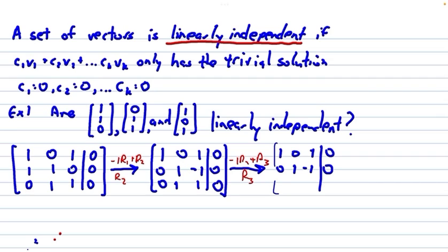0, 1, negative 1, 0, this would be 0, 0, 2, 0.